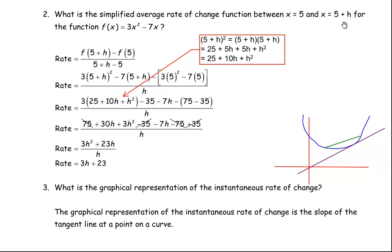To illustrate: if we wanted the slope of the secant line from x equals 5 to x equals 6, then h would be 1. Putting 1 in: 3 times 1 is 3, plus 23 gives 26. So 26 would be the slope of the secant line from x equals 5 to x equals 6. If you want a different value, you could use a different h value.